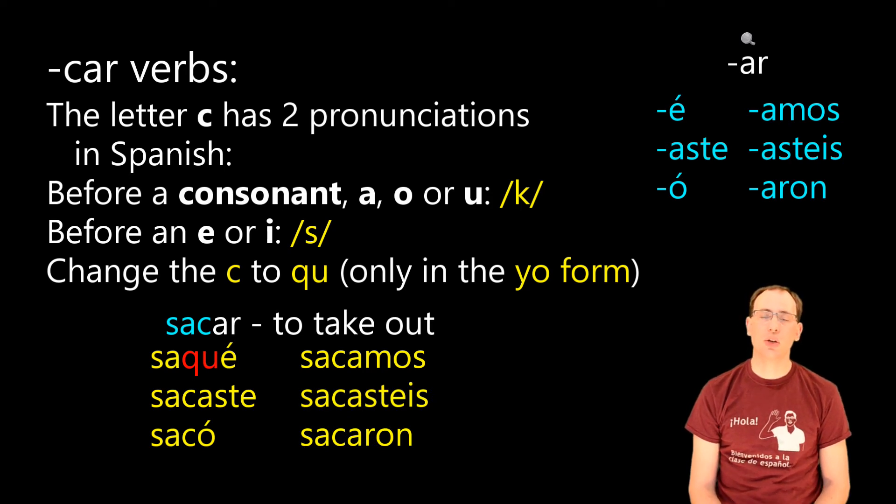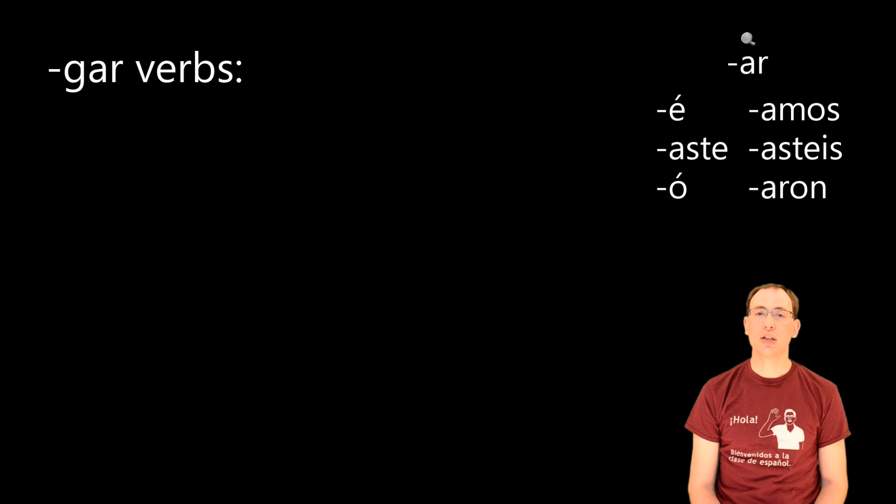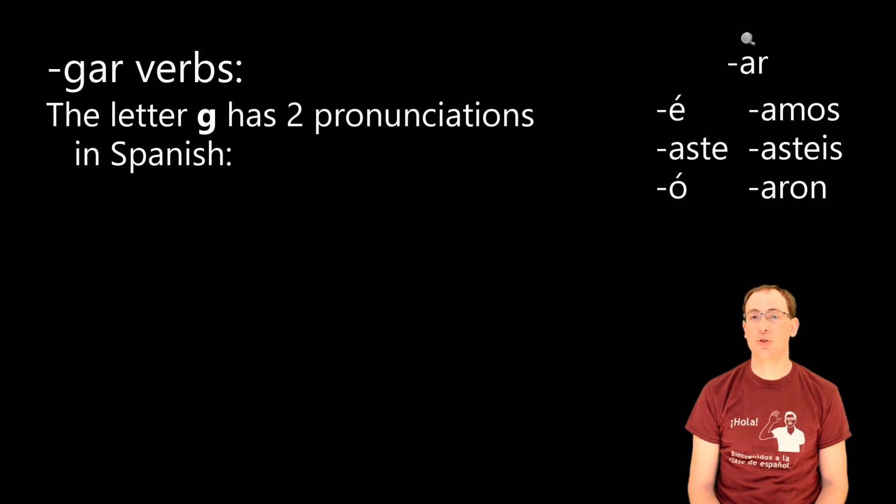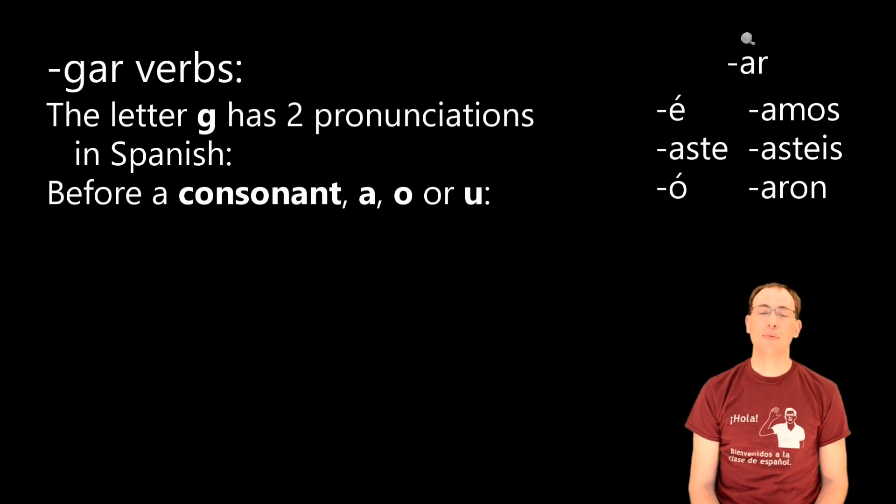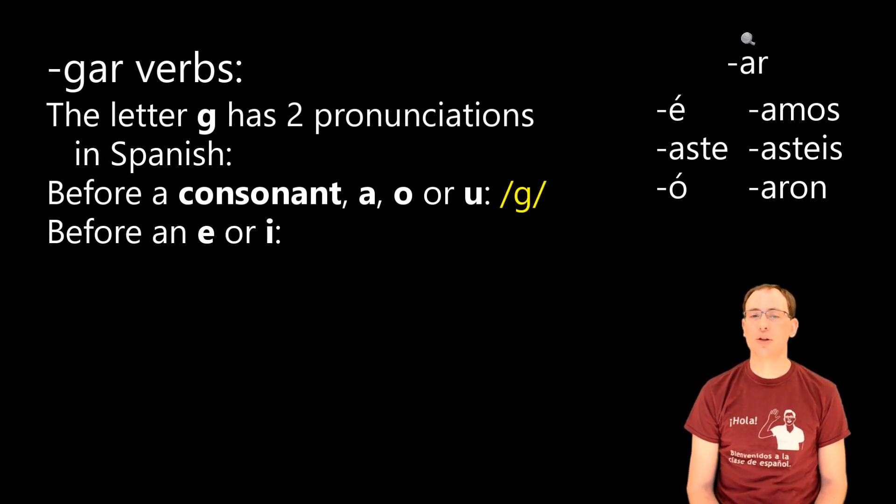We have a similar thing going on for gar verbs. Just like the letter c, the letter g has two pronunciations in Spanish. If the g comes before a consonant, an a, an o, or a u, it's pronounced /g/. If the letter g comes before an e or an i, it's pronounced /h/, like an English h.